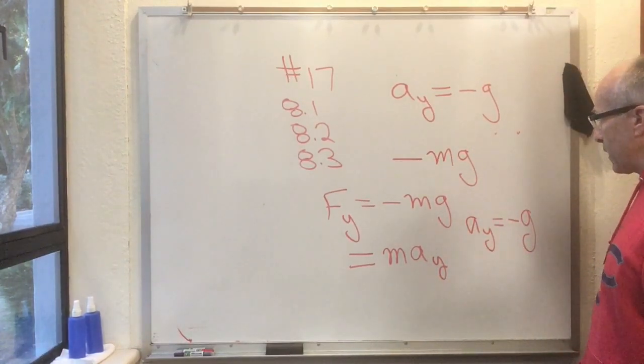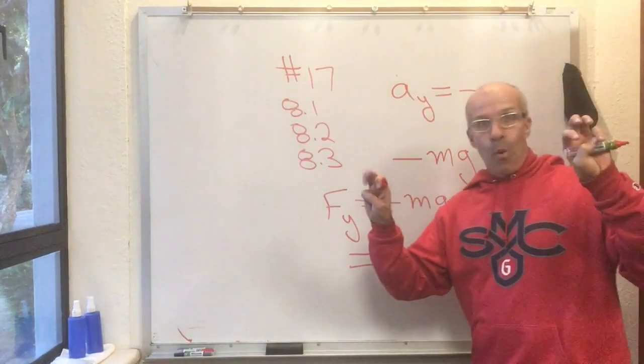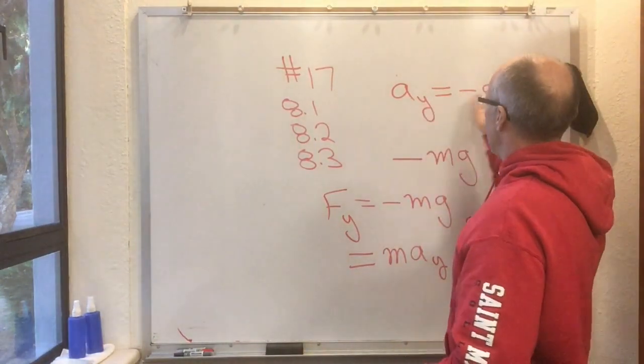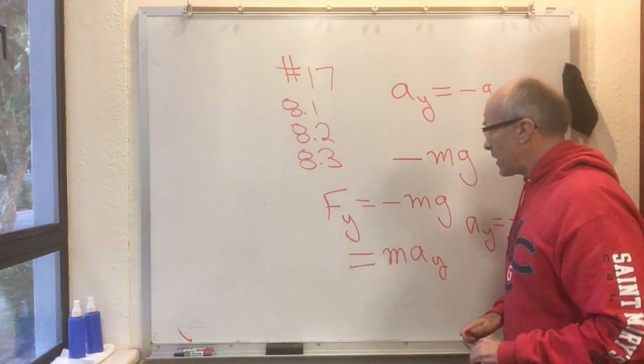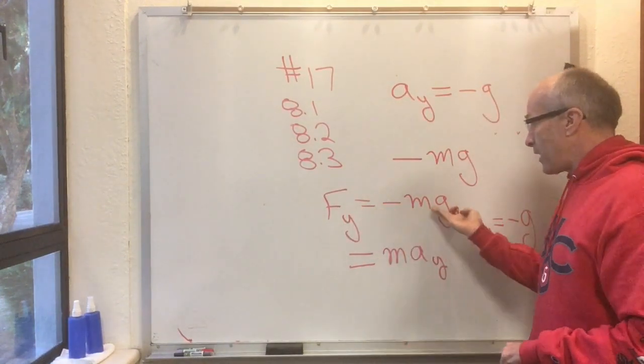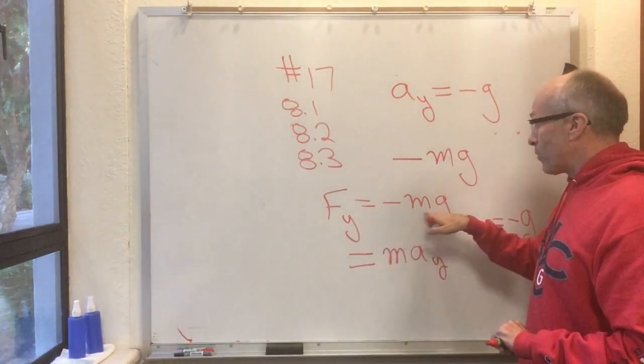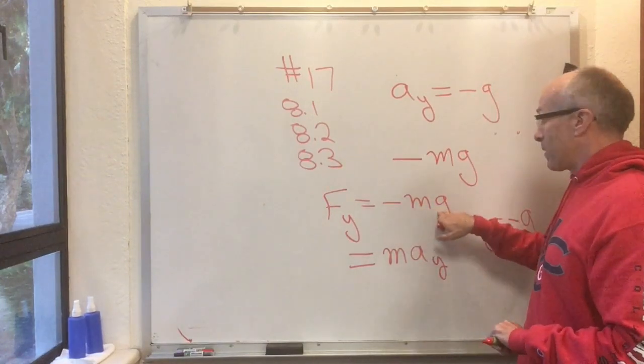We're just saying the same thing, except now we have a why for it. Why does everything accelerate downward with acceleration minus g? Because it's being pulled downward with a force of value minus mg.